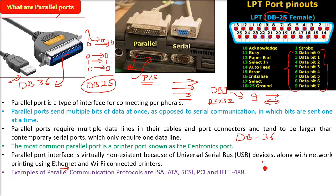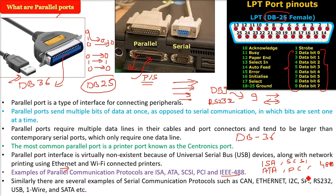Examples of parallel communication protocols include ISA, ATA, SCSI, PCI, and IEEE 488. To complete the discussion, there are also recommended standards and protocols for serial communication, including CAN, Ethernet, I2C, SPI, RS232, USB, one-wire, and SATA.